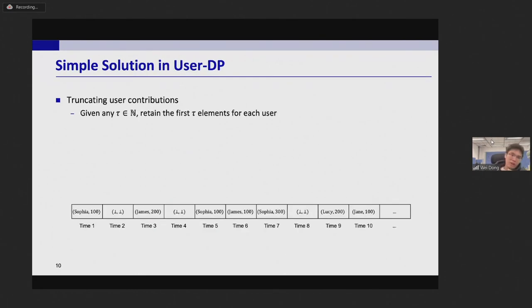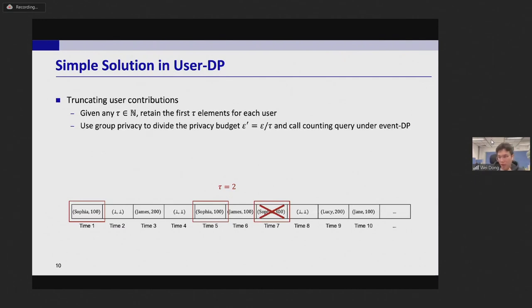My simple idea is to truncate user contributions. More precisely, given any tau, we only retain the first tau elements for each user. In the first example, when tau equal to two, we will truncate the atom at time seven. And after truncation each user can have at most tau data updates, so we can further use the group privacy to divide the privacy budget and call the algorithm for counting query under event-DP.